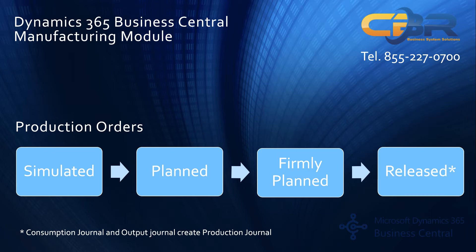Once you have a released production order, you can track consumption journals for raw materials and output journals for finished goods, as well as a newer journal called a production journal, which combines the two. Having set this brief overview of how things work in the module, I'd like to start showing you the setup and the production order process in the live product.